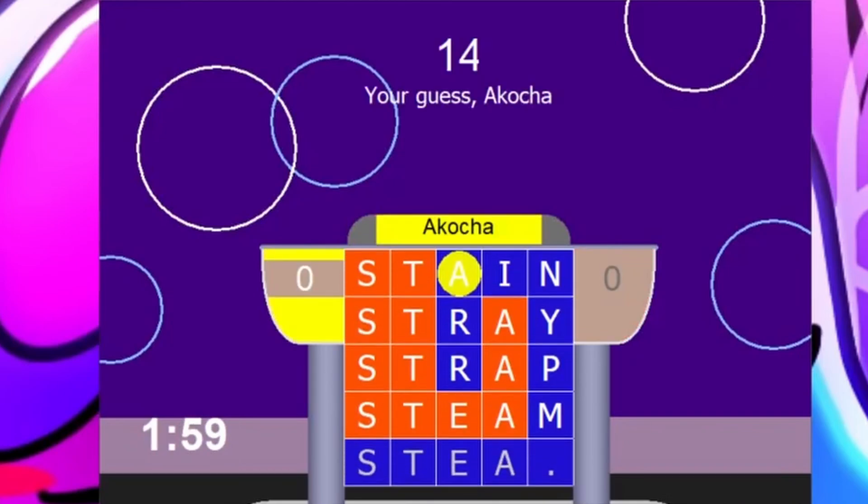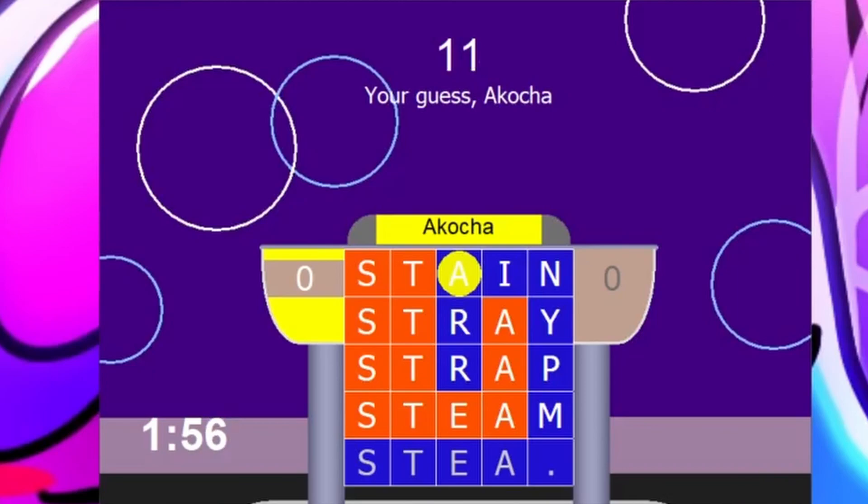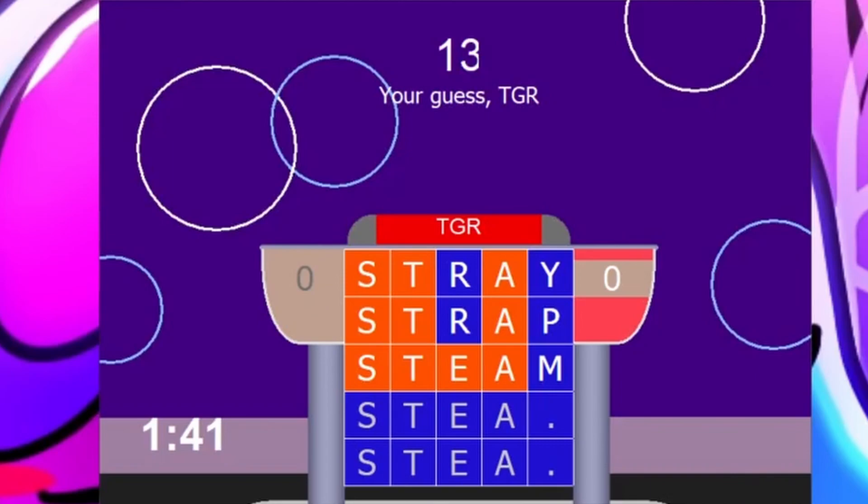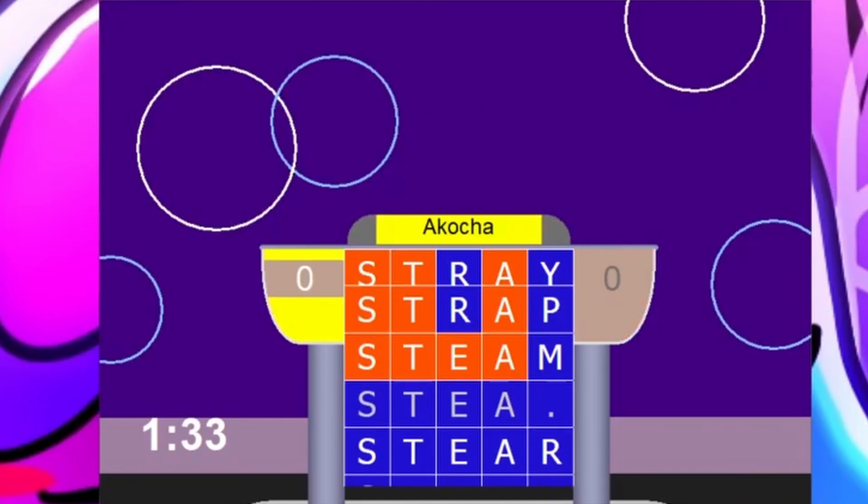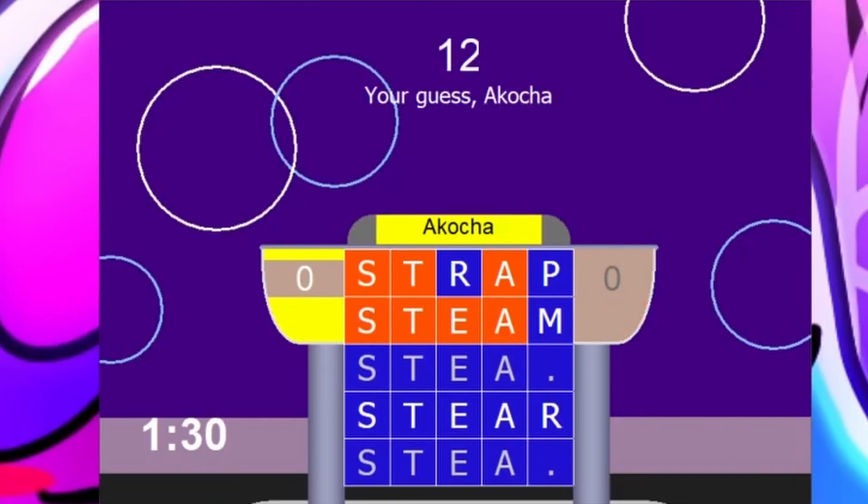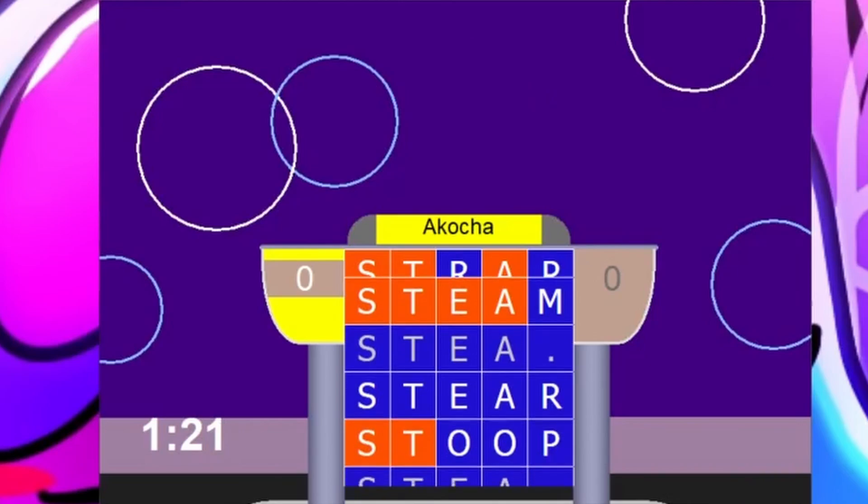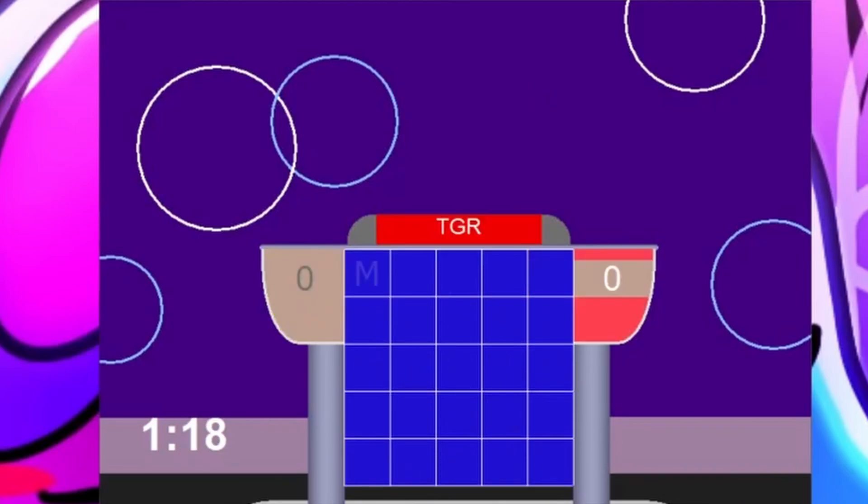Akocha, you're up. How about... What is this for? Alright, we gotta buzz you out Akocha. TGR, back to you. Steer, S-T-E-A-R. That is not a word, unfortunately. Akocha. How about Stoop, S-T-O-O-P, Stoop. Nothing. Back to TGR. It was steel. It was steel.